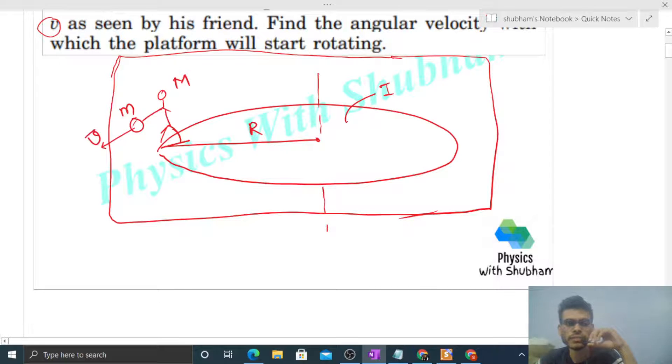Now what happens is the kid throws the ball towards his friend with a velocity v, and this velocity v is observed by his friend standing on the ground. From the ground frame, the velocity of the ball is v. So what will happen? You can see that there will be a force exerted by the kid on the ball when he throws it.